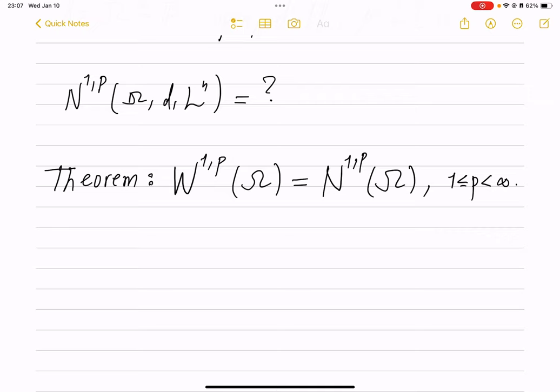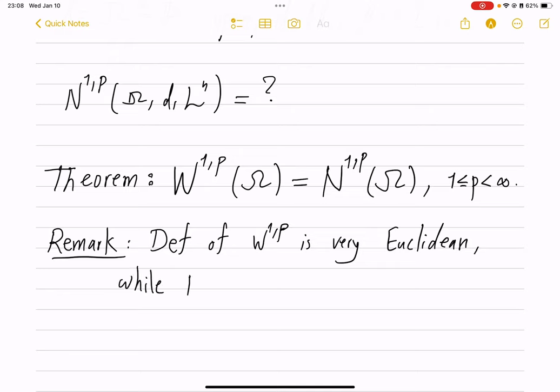And that's great because this is quite impressive since the definition of W^{1,p} is very Euclidean. We talk about partial derivatives, directions, and many results there follow from applying Fubini type theorems, which again depend on foliation of the Euclidean spaces. Now that we know they are equal becomes quite impressive.